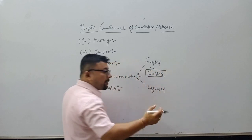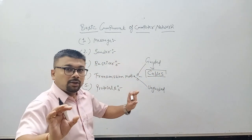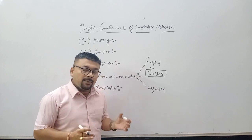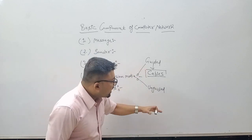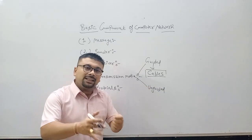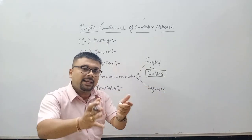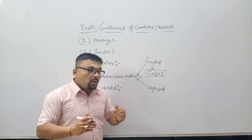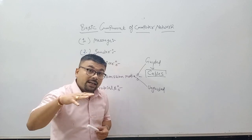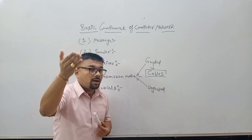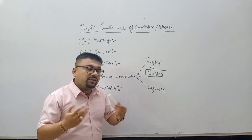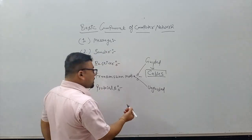Cables — this is also a category in the network and we will discuss this. After that we have the unguided medium. Unguided means the path varies — you don't know exactly what path is being taken. The data will travel as waves and signals, like analog signals in waveform.